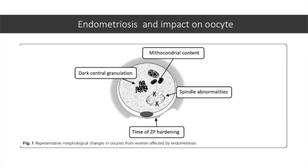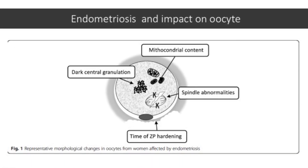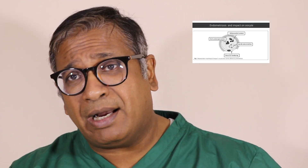If you look at this slide, what does endometriosis do and what impact does it have on the oocyte? There is an impact on mitochondrial content — you see dark central granulations. Remember when the embryologist comes back and says they can see dark oocytes. There are spindle abnormalities — have a look at the picture for a better idea. The zona, which covers the egg, starts getting hardened. So it seems to be both a morphological and a quality decline in the oocyte.